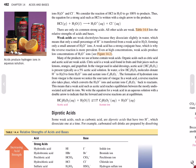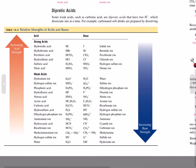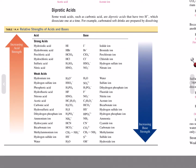There are only six common strong acids. All other acids are weak. Table 14.4 lists the relative strengths of acids and bases.